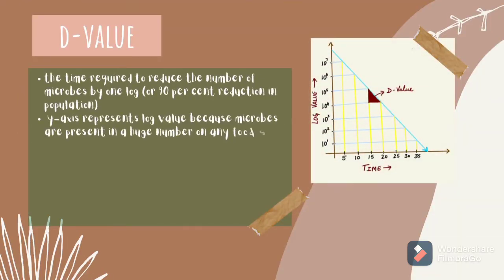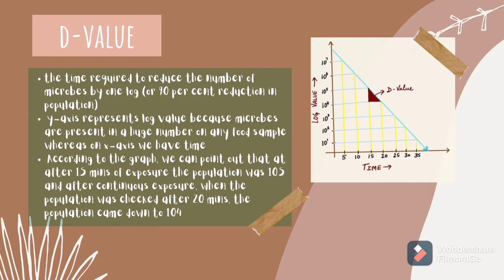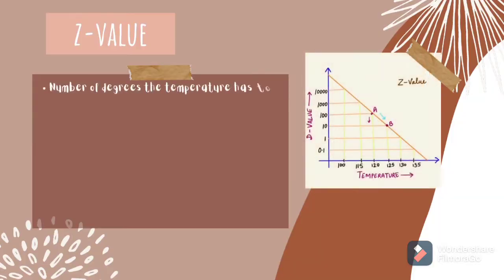D-value is the time required to reduce the number of microbes by one log, which is a 90% reduction in population. Looking at the graph, the Y-axis represents log value because microbes are present in a huge number in any food sample, whereas the X-axis is time. From the graph, after 15 minutes of exposure the population was still high, and after continuous exposure the population is less than before.